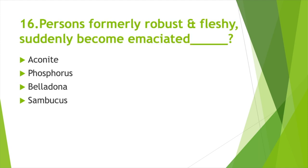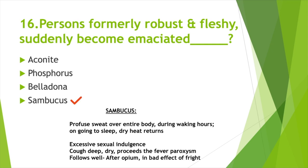Persons formerly robust and fleshy suddenly become emaciated — Option A: Aconite, Option B: Phosphorus, Option C: Belladonna, Option D: Sambucus. Answer: Option D, Sambucus. Profuse sweat over entire body during waking hours; on going to sleep, dry heat returns. Excessive sexual indulgence. Cough deep dry. The fever paroxysm follows well after Opium in bad effects of fright.